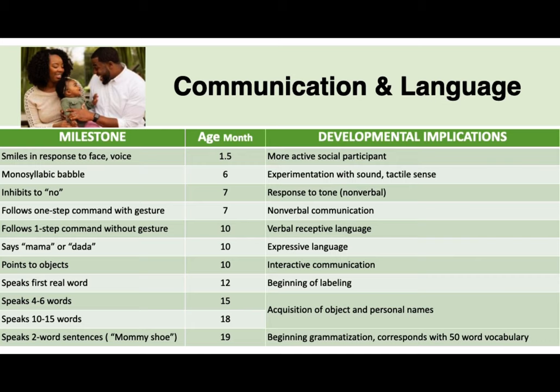In terms of communication and language: after one month, they can smile in response to face or voice; at six months, they have monosyllabic babbling; at seven months, they inhibit to 'no' or follow a one-step command with gesture; at ten months, they can follow a one-step command without gesture, say mama or dada, and point to objects; and at twelve months, they can speak their first real word.